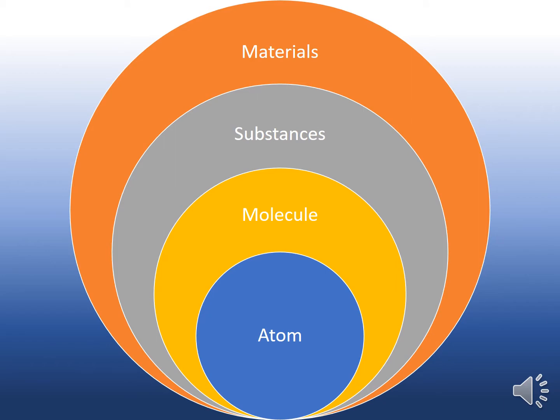This is an illustration that shows how materials are formed. As you can see here, the smallest particles are an atom, which is the basic unit of matter. When atoms bind together, they form a molecule. Molecules are usually made up of two or more atoms, which may be different or the same. When molecules come together, they form substances, and substances form materials.